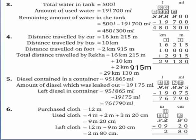Question number 4: Rekha travels 16 km 215 m by car, 10 km by bus and 2 km 915 m on foot. Find the total distance travelled by her. Write the statement — distance by car 16 km 215 m, by bus 10 km, on foot 2 km 915 m. Total distance find karna hai, so inhe plus karenge. Column form mein arrange karenge and then add karenge. So our answer is 29 km 130 m.